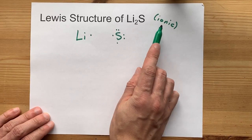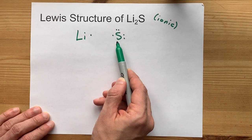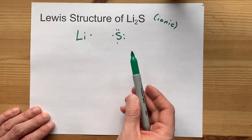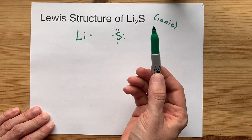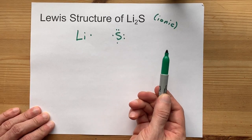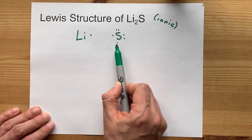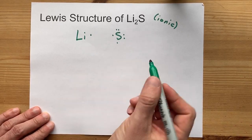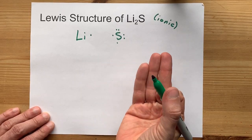Again, in ionic compounds, metals will give their electrons away to non-metals. And non-metals want a full octet to be stable. Octet meaning eight electrons in its outer shell. You currently have six. So where are you going to get the extra two from?